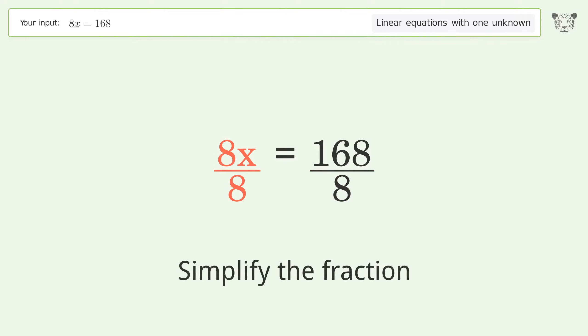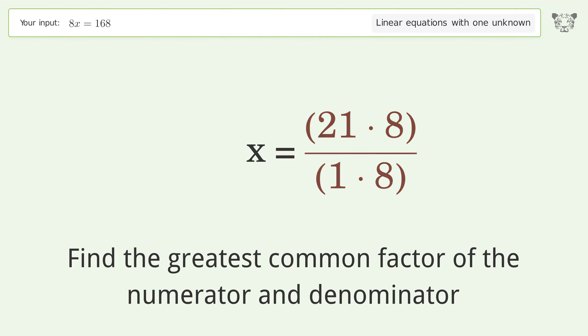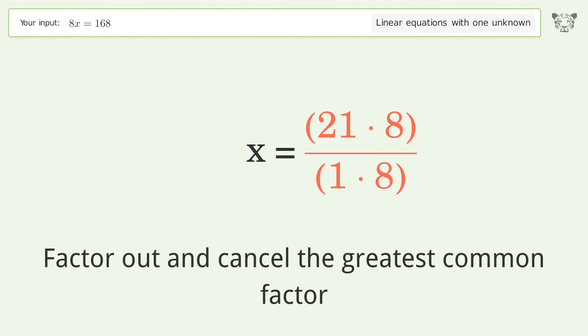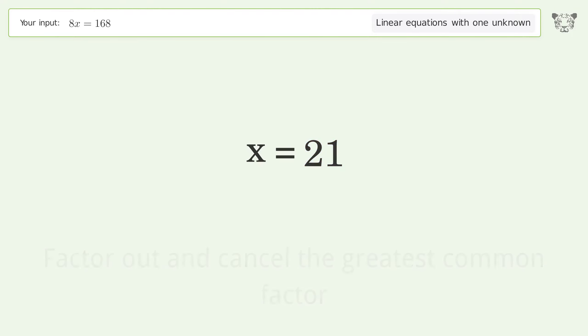Simplify the fraction by finding the greatest common factor of the numerator and denominator. Factor out and cancel the greatest common factor. And so the final result is x equals 21.